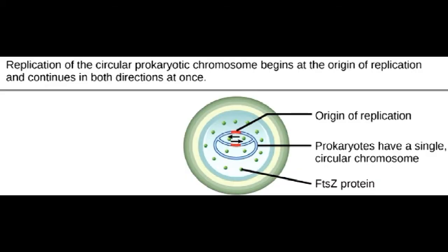The single circular DNA chromosome of bacteria is not enclosed in a nucleus, but instead occupies a specific location, the nucleoid, within the cell.